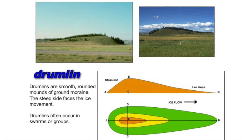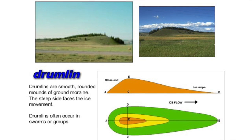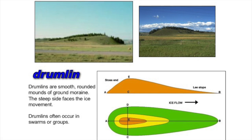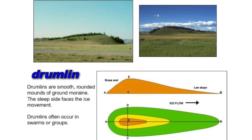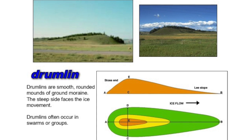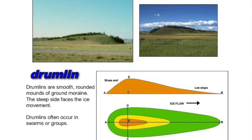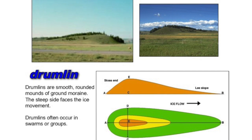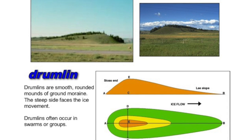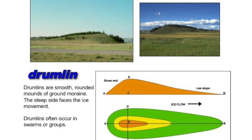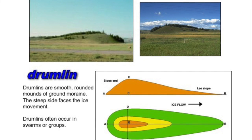One end of the drumlin, as we can see here, is particularly steep, which is the stoss end, and the lee side has a much more gentle and gradual slope that reaches ground level. Sometimes there are several drumlins that form together — these are called a swarm of drumlins because they look a bit like a box of eggs with bumps and rounded lumps.